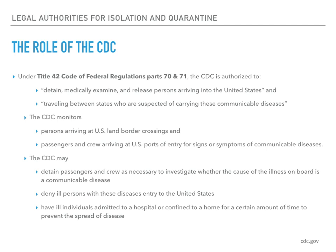Under Title 42, the Code of Federal Regulations, Part 1771 — last updated in 2012 — the CDC's Division of Global Migration and Quarantine has the legal authority to detain, medically examine, and release persons arriving into the United States and traveling between states who are suspected of carrying those communicable diseases. As part of its federal authority, the CDC routinely monitors persons arriving at U.S. land border crossings and passengers and crew arriving at ports of entry for signs and symptoms of communicable diseases. The CDC has the legal authority to detain any person who may have an infectious disease specified by executive order to be quarantinable.